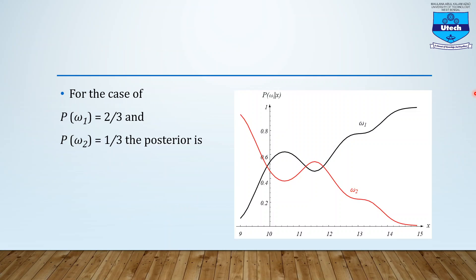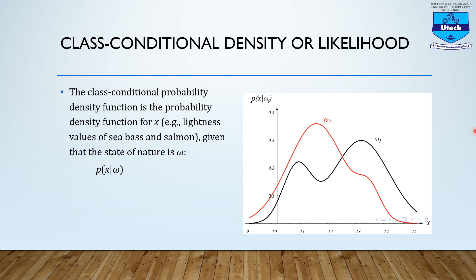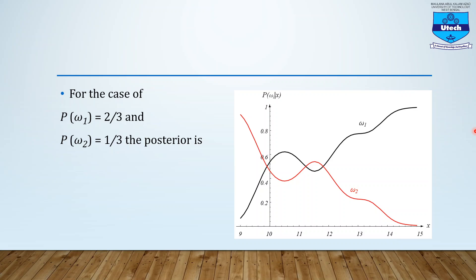Now let us move to the next. The value of posterior probability can be illustrated: for a particular case when probability of W1 — the probability of one particular state, the first class — is two-thirds and probability of W2 is one-third. Then the posterior, that is probability of W1 given x, is represented along the y-axis while the x-axis remains x. The curve shown earlier was for the likelihood, and for that scenario this will be the posterior probability curve.